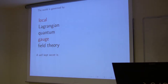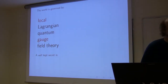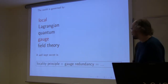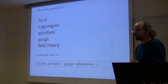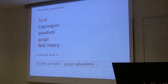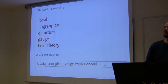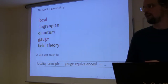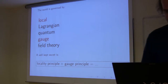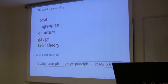You don't need to know any quantum field theory to follow this talk. Here's a well-kept secret, known for 70 years but not highlighted in textbooks. If you combine the locality principle with what physicists call gauge redundancy — which is not actually redundancy, and should better be called gauge equivalences — the word equivalence there is just the notion of univalent equivalence from the previous talk. This combination is the locality principle combined with the gauge principle, which in mathematics is known as the stack principle, the stack condition.